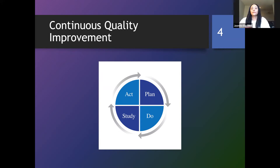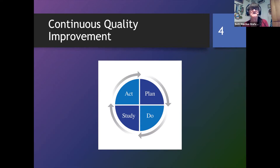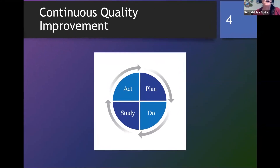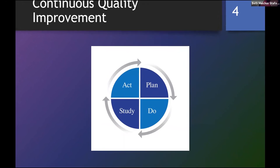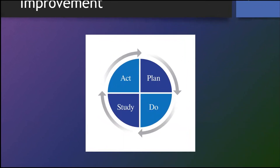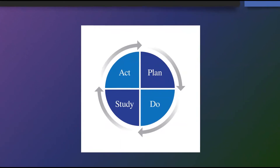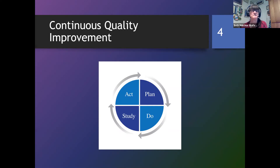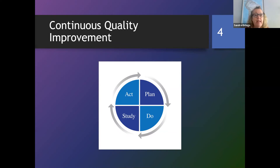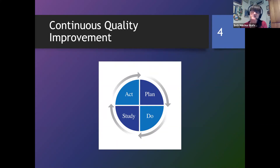This slide shows the model we use. We plan our strategies based on a list of criteria. We do or implement our program. We study or evaluate, and we use these findings to make changes before implementing a strategy again. CQI or continuous quality improvement shows why evaluation is an important part of what we do. Through using a CQI model, we can identify if our strategies are effective for stopping sexual violence before it happens, and what strategies really increase a protective factor or decrease a risk factor.